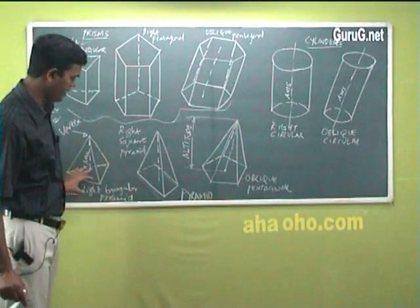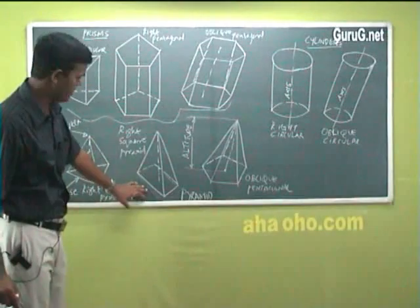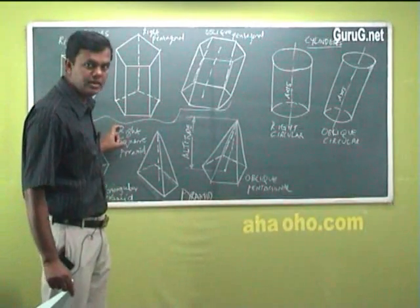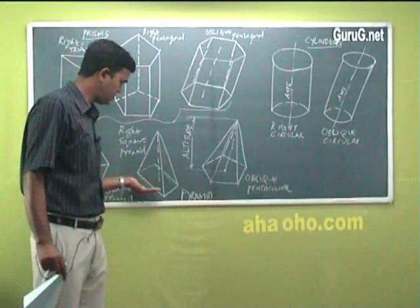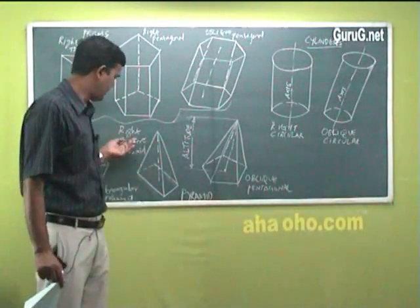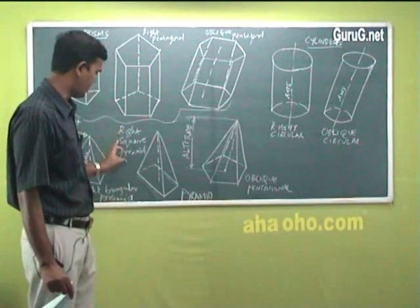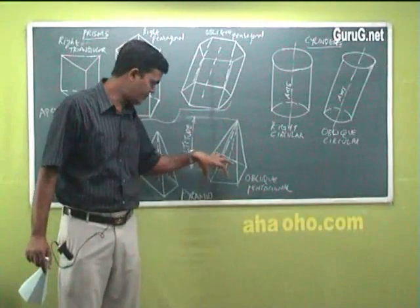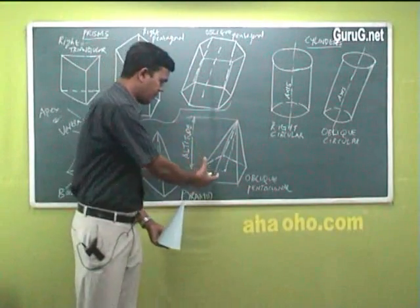This is for a triangle. One more, I have a square here. It is a right square pyramid—the word right is used when the base is placed properly on the ground. And one more I have here, oblique pentagonal pyramid. I have a pentagon shape at the bottom.